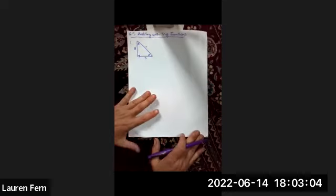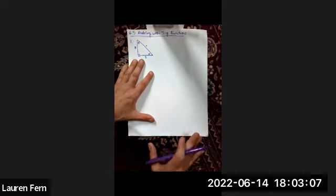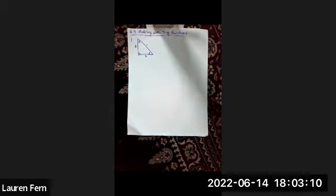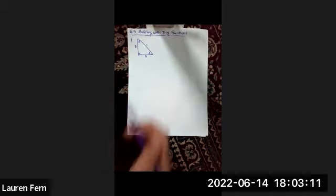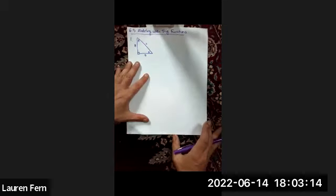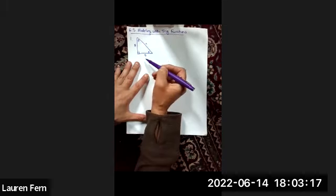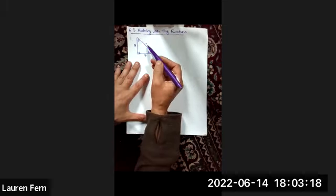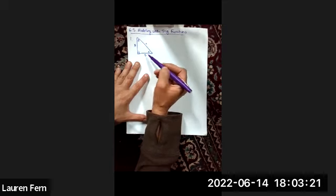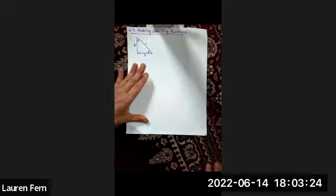The first example is to solve for the unknown side and angles of this right triangle. We've got a 90-degree angle, we're looking for our hypotenuse, we have the length of each of the legs, and we want to find each of the angles.